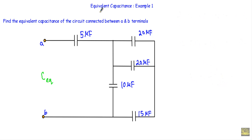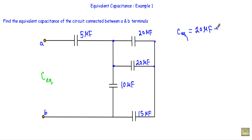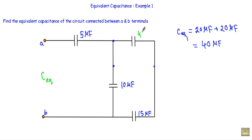Now, looking at the terminals, to calculate the equivalent capacitance I first have to simplify the circuit as much as possible. With respect to this terminal and this terminal, this 20 microfarad and this 20 microfarad are connected in parallel. So I can reduce these two capacitors into a single capacitor. Since they are in parallel, I simply add them up, giving an equivalent capacitance of 40 microfarad. I will replace the two 20 microfarad capacitors with a single 40 microfarad capacitor.